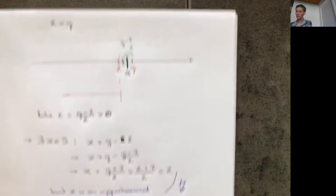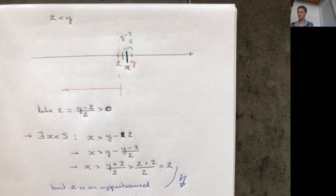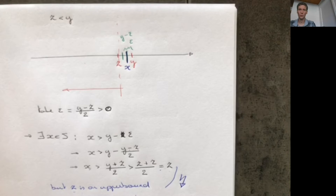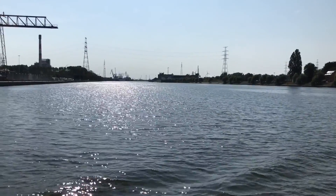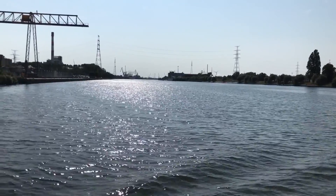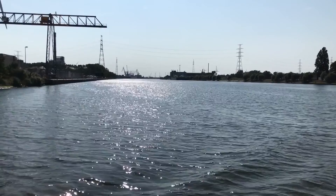This finishes the proof of this equivalent definition of a supremum and infimum. The proof for the infimum is very similar — you only have to change some inequalities, change upper bounds to lower bounds, and so on. I leave this as an exercise. Let's take a small break. Welcome back. Now we're going to see the second result in our part on infimum and supremum.